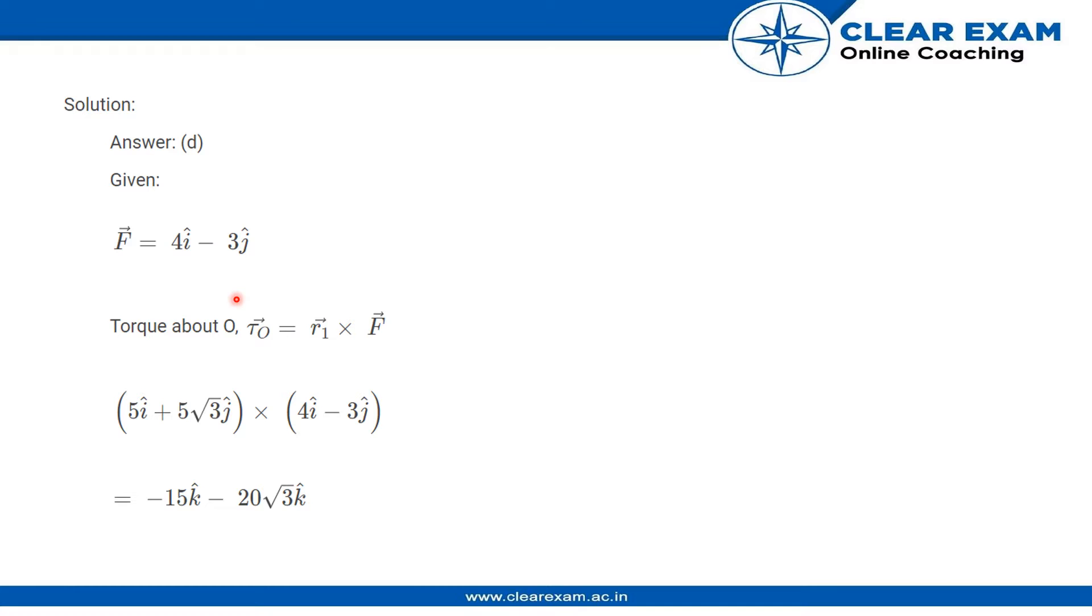In this question, we first find the torque about point O. We have force F vector and radius r vector. We know that torque τ = r × F. Therefore, we have r vector as 5i + 5√3j cross 4i - 3j.